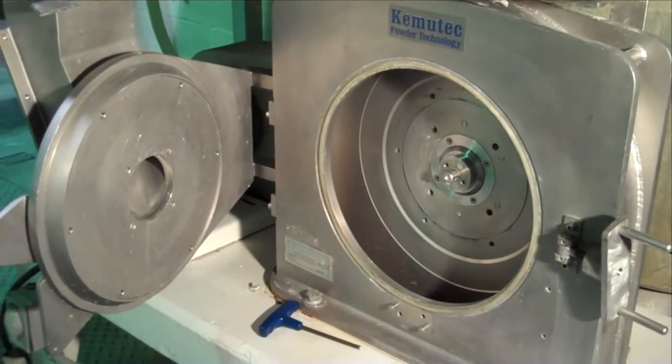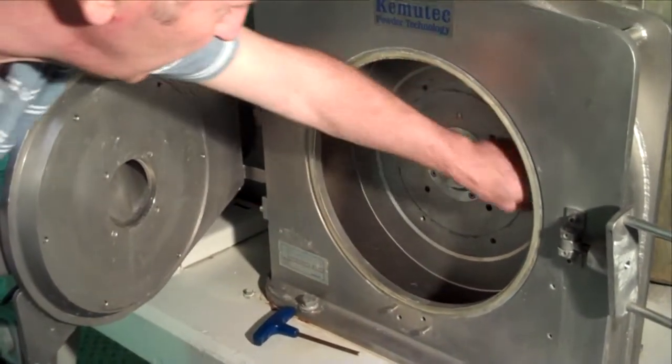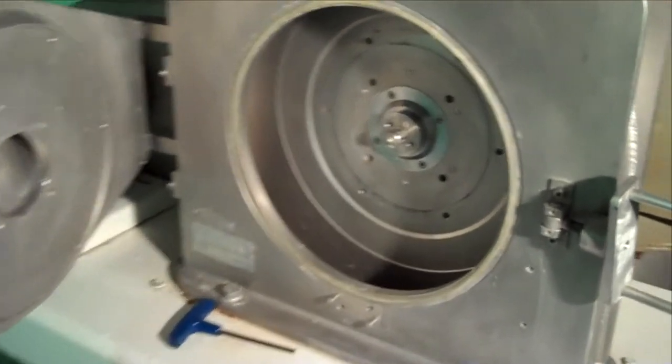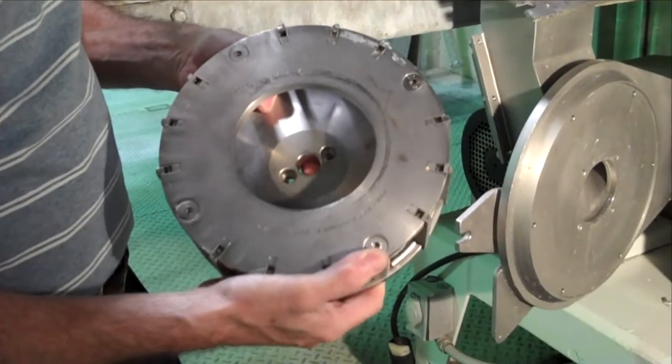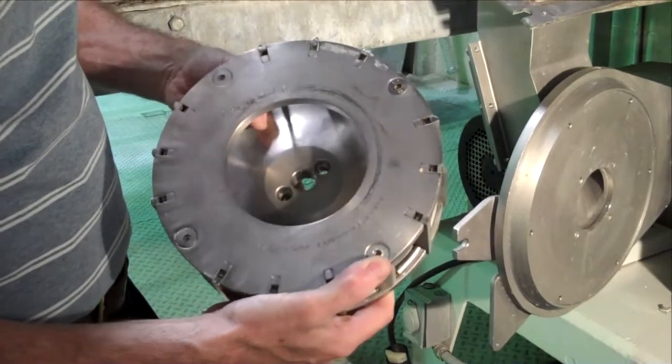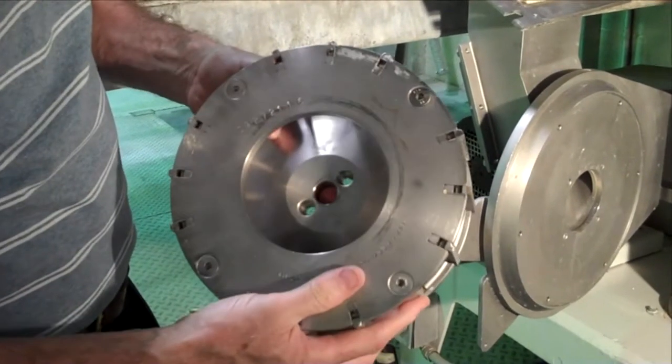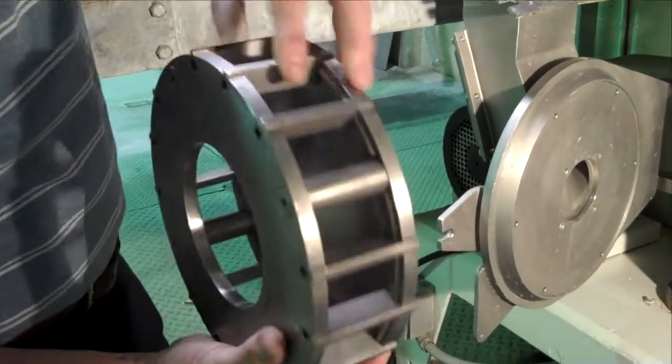With the grinding media removed, the mill is left with nice clean easy access, hygienic and ideal for maintenance and regular cleaning operations. The alternative grinding media is the turbine and screen arrangement. In this setup, the high-speed rotor is mounted onto the main drive shaft. Turbine blades here perform the impact grinding.